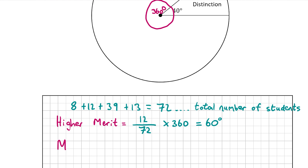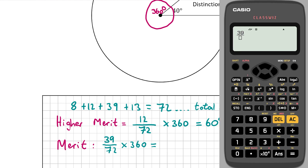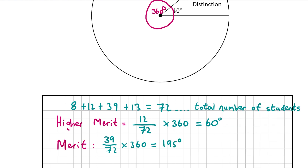Now let's do the same for merit. 39 people achieved a merit grade out of 72 students in total, and we multiply by 360 to work out how many degrees to give to the merit section in the pie chart. This gives us 195, so 195 degrees in the pie chart should go to the merit section.